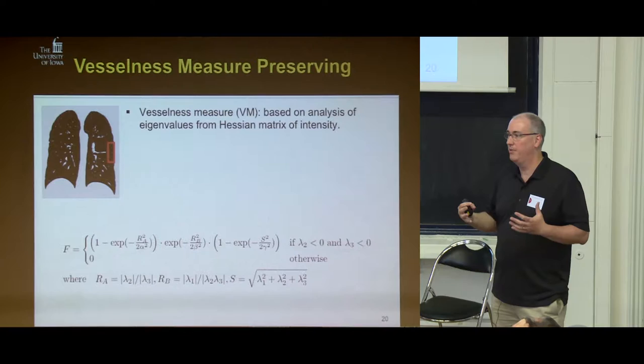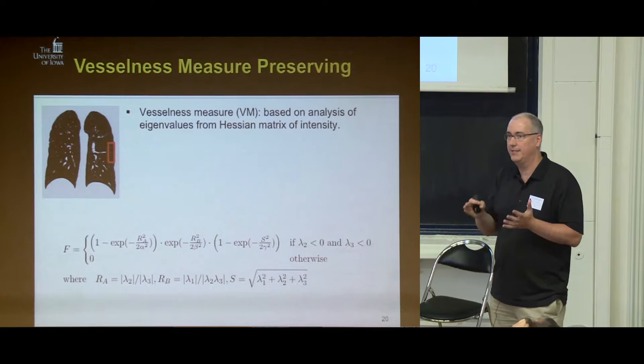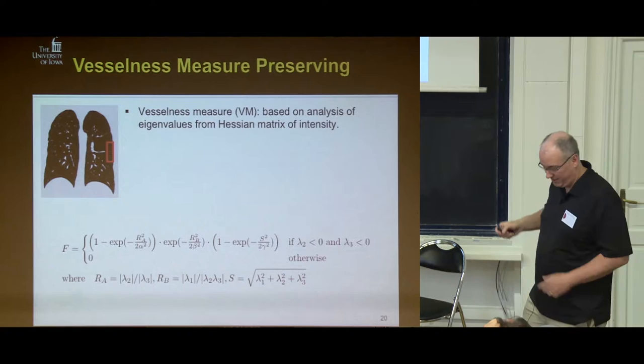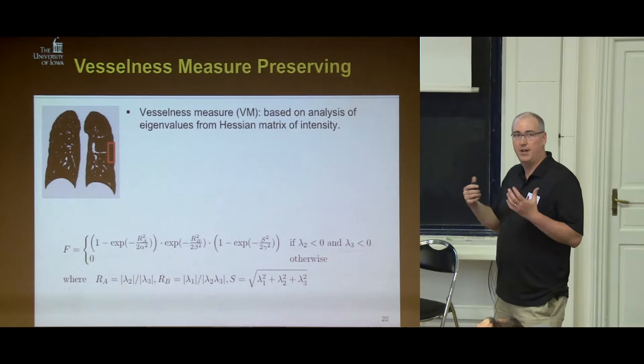It turns out that just looking at the sum of tissue volume squared differences isn't enough. So we added this vesselness metric based on the Frangi vesselness filter, which looks at the eigenvalues of the Hessian matrix. Applying this technique to the lung image, you're able to find tubular structures in the image.